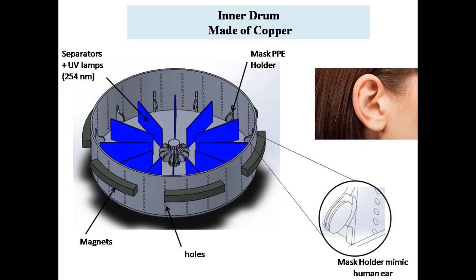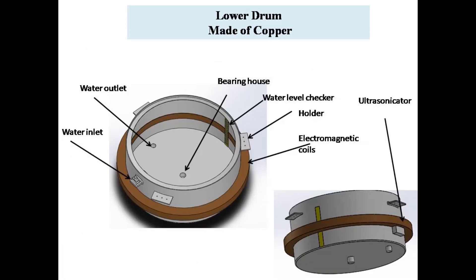It also consists of separators that help all PPEs to not come in direct contact with each other and also have UV lamps fixed in them to irradiate UV with PPE. The magnets around the drum help it to rotate when the electromagnetic field is applied.